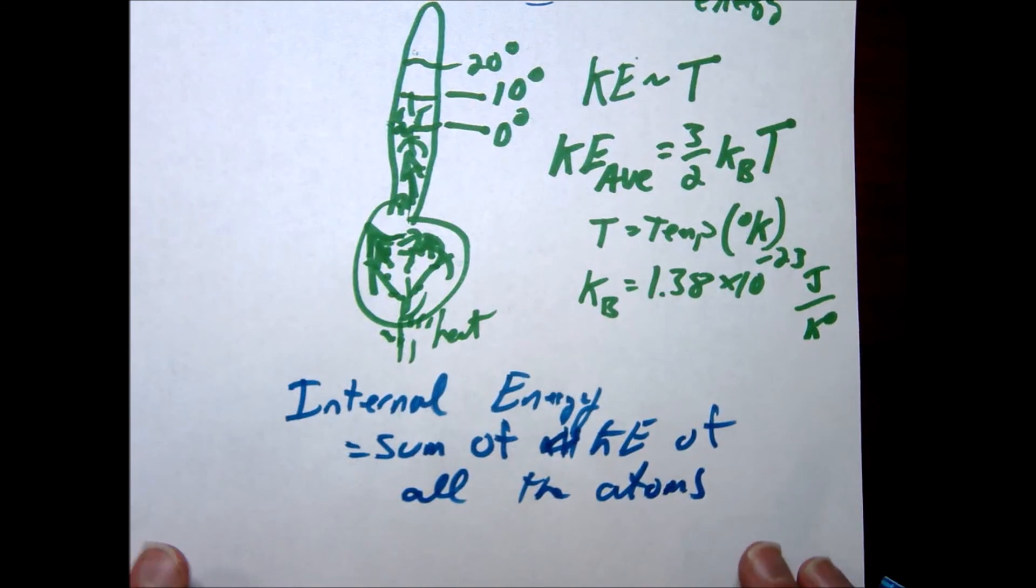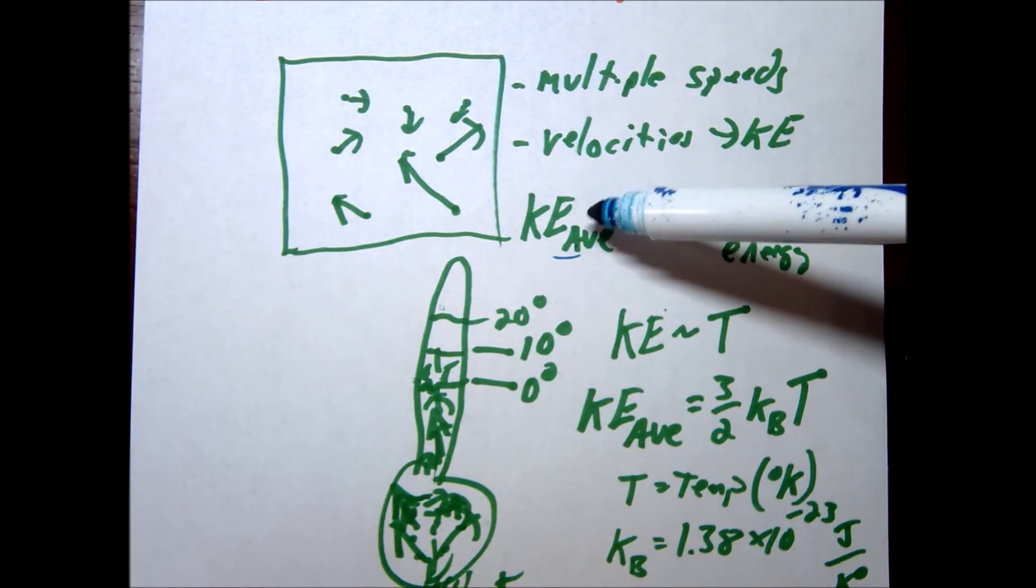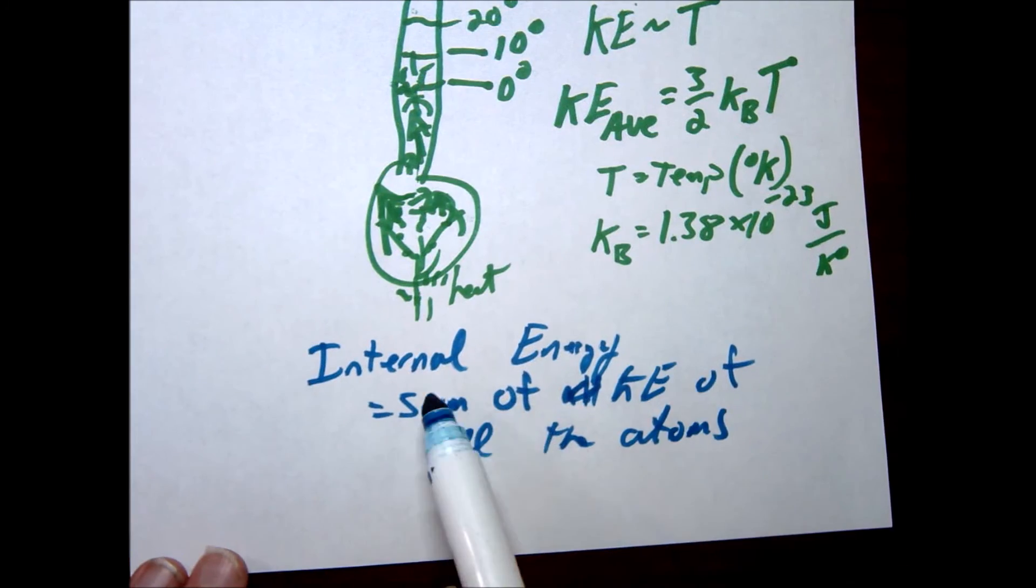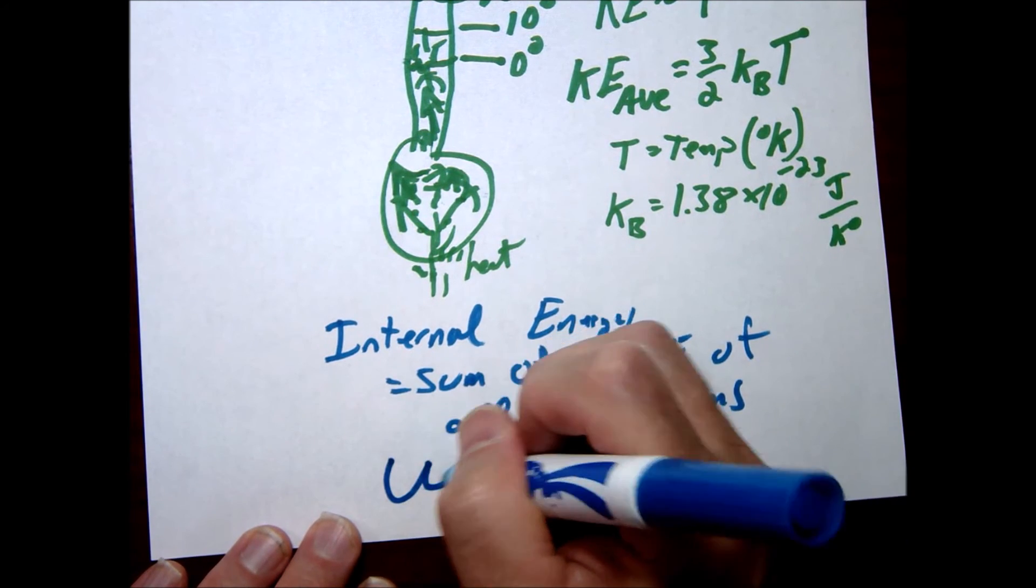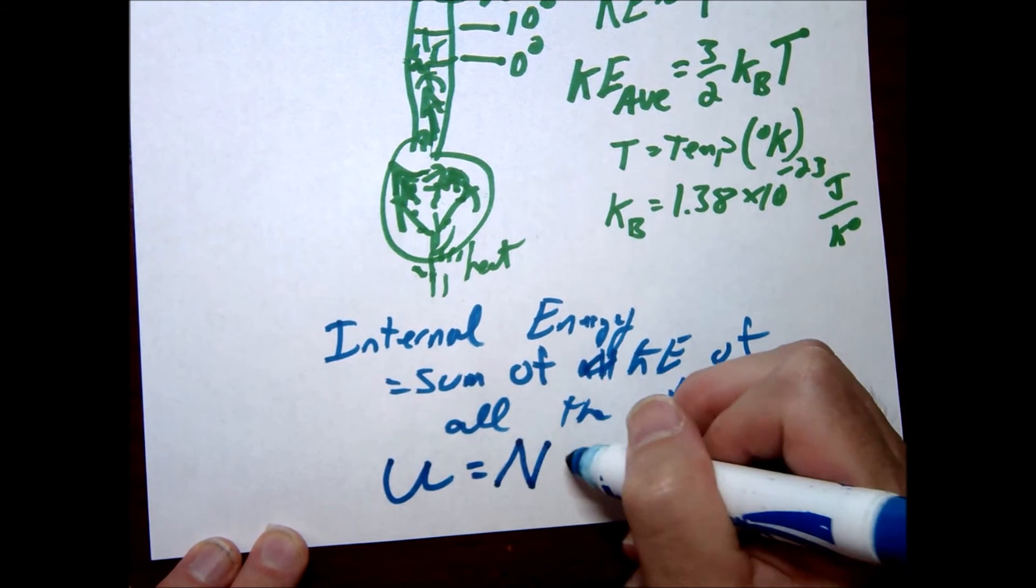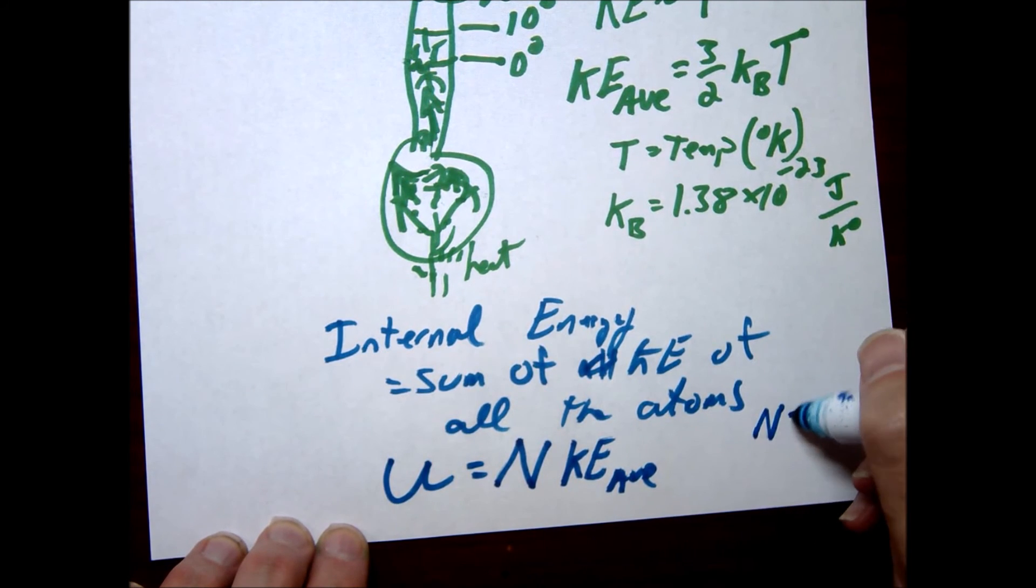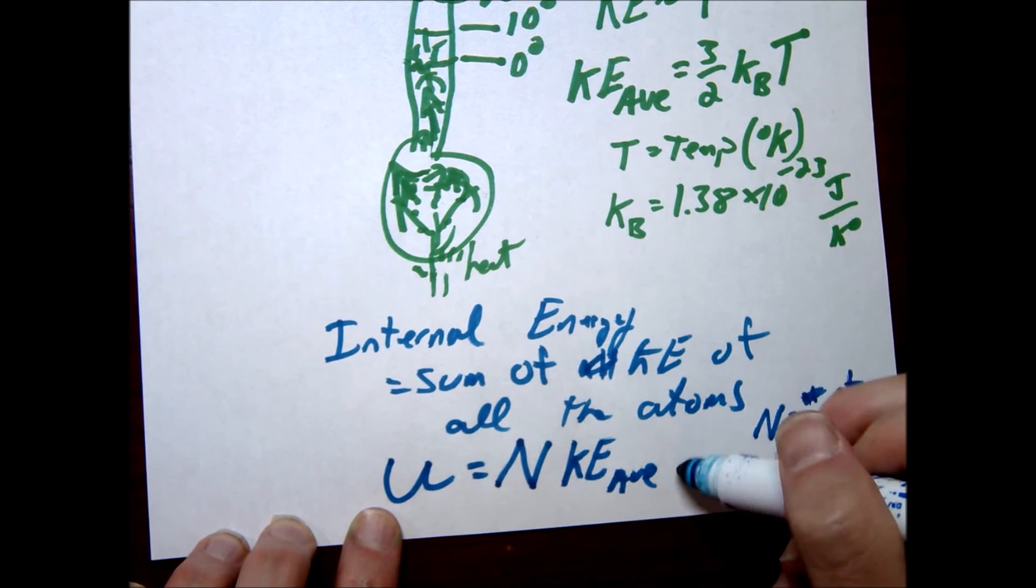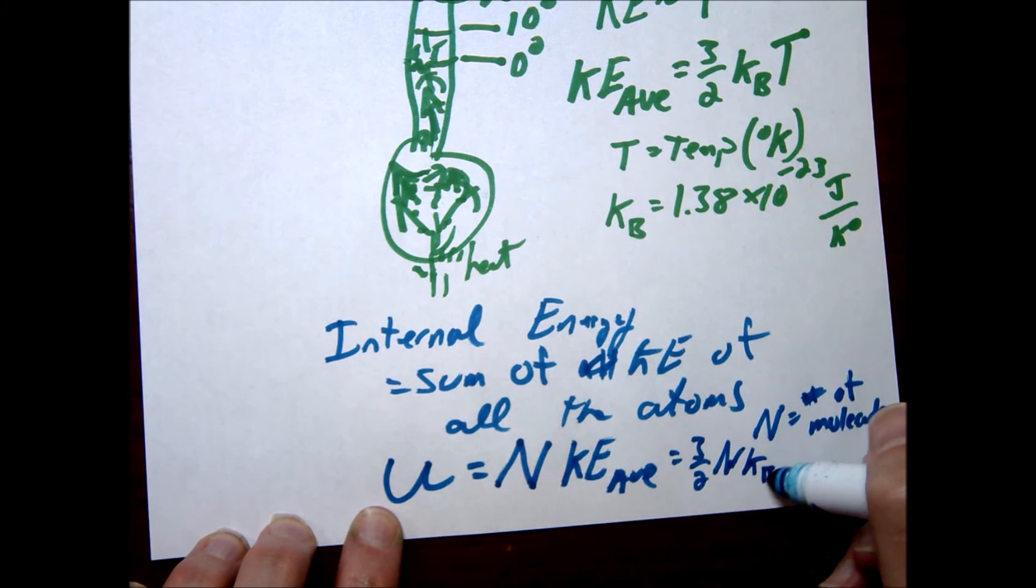So if you have a billion atoms, you would take whatever the kinetic energy average is, multiply it by 1 billion, and there you go, that's the number, that would be the actual internal energy of the substance. So the symbol we use for internal energy is going to be U, and that would simply be N times the KE average, where N is going to be the number of atoms or molecules. So you could also write this as 3 halves N kBT.